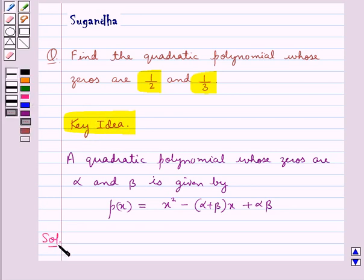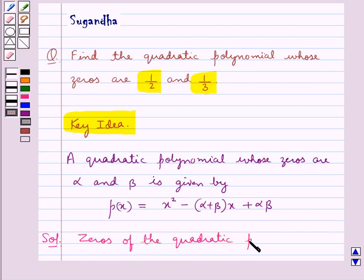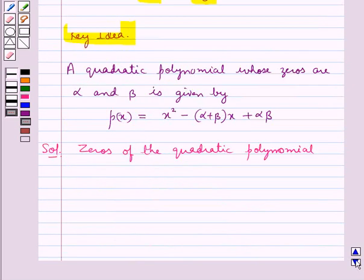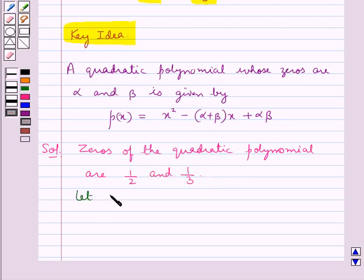Let's move on to the solution now. We are given that the zeros of the quadratic polynomial are 1 upon 2 and 1 upon 3. We take alpha equal to 1 upon 2 and beta equal to 1 upon 3. That is, alpha and beta are the zeros of the quadratic polynomial.